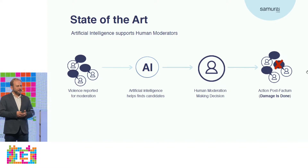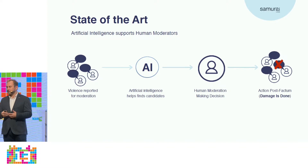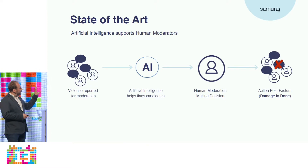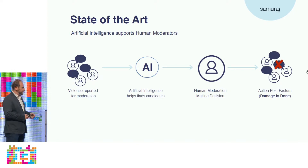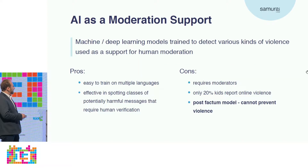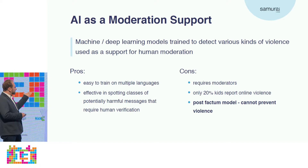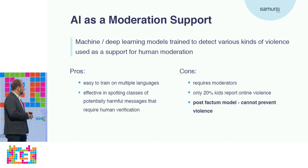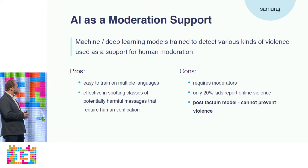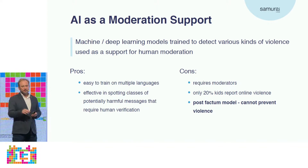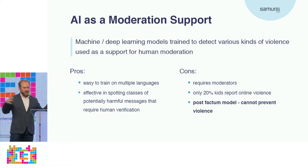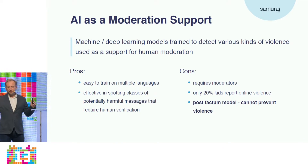Sexual predators have their own methods of grooming and attracting children, so they become immune to these kinds of systems. The fundamental problem is that it's a post-factum model — the damage is already done. Someone has already been attacked, a child has already been bullied by a sexual predator, and only after that can we, in a sense, call the police.